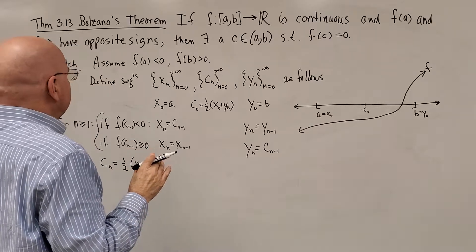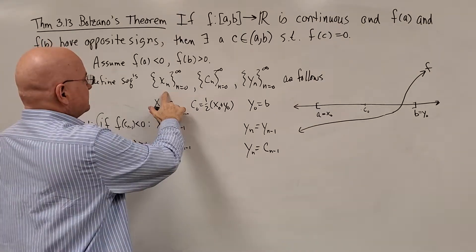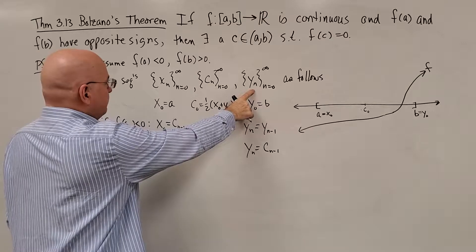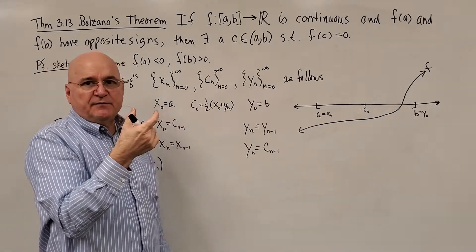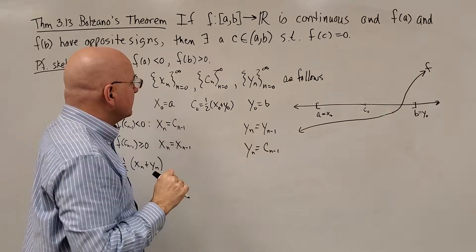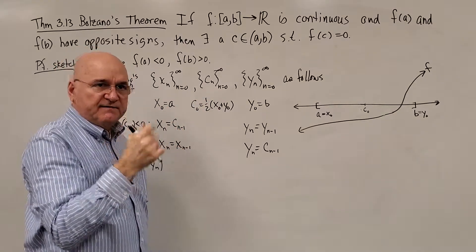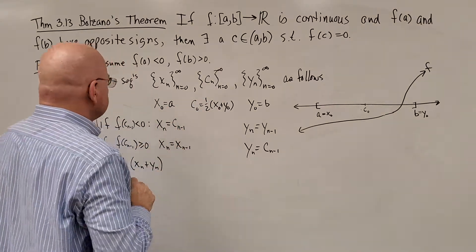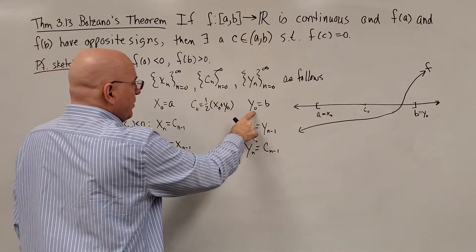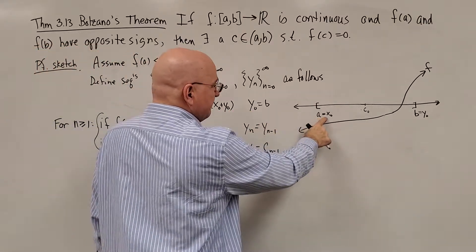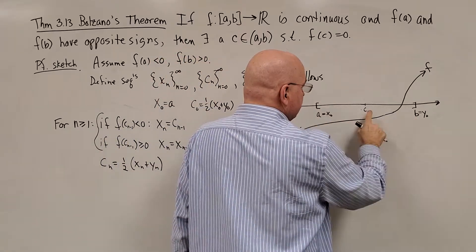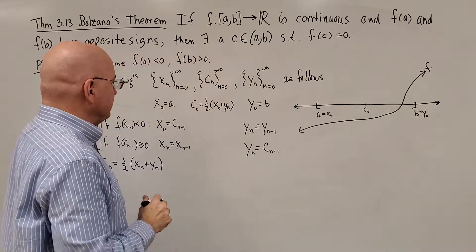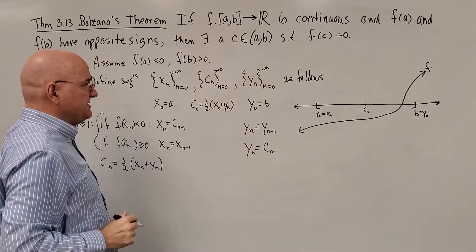We're going to define three sequences: x_n, c_n, and y_n. x_n and y_n are going to be the endpoints of an interval for each n. c_n is going to be the midpoint of that interval. So x_0, y_0 is just like we have here on the board. x_0 is a, y_0 is b, c_0 is the midpoint between them. Add them up and divide by two.